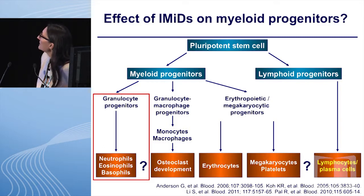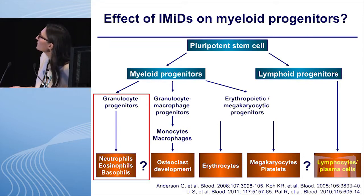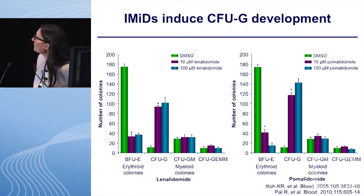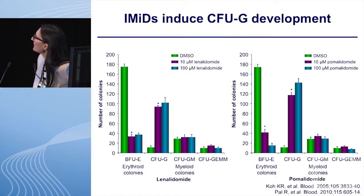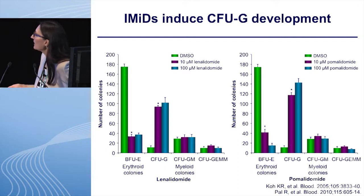After we delineated the effect of those drugs on osteoclasts, erythrocytes, and plasma cells, we were also interested in the effect on neutrophils and megakaryocytes. We started our work by using CD34 cells and performing colony formation assays. What we observed was pretty striking: in contrast to what we would expect in patients who are neutropenic, we saw an upregulation of the CFUG — the granulocytic progenitor colonies — with lenalidomide and pomalidomide, at the expense of the red colonies, the BFUEs.